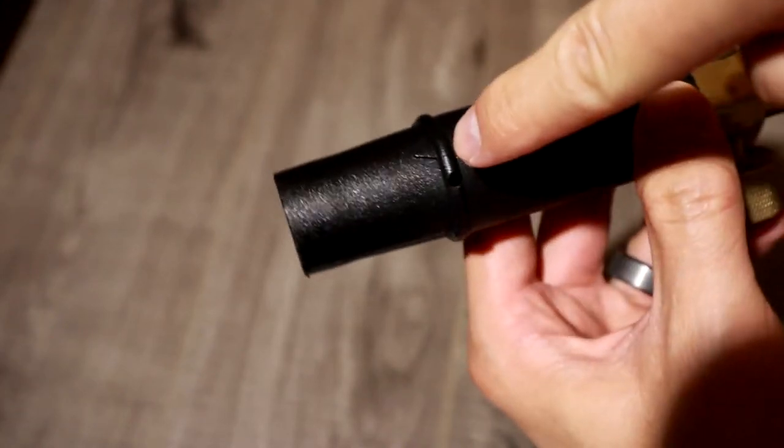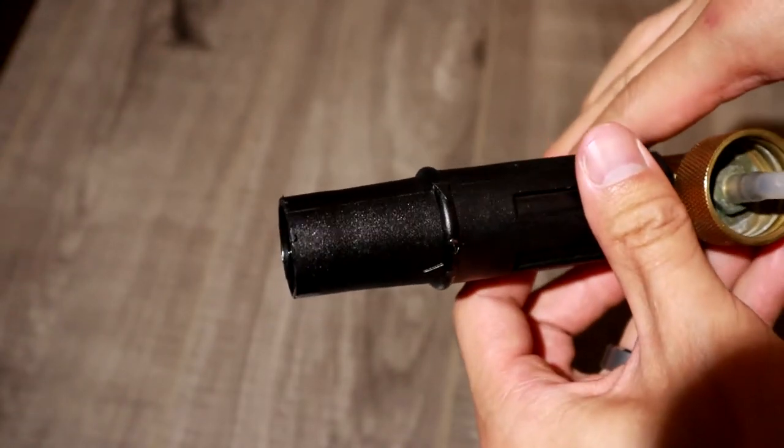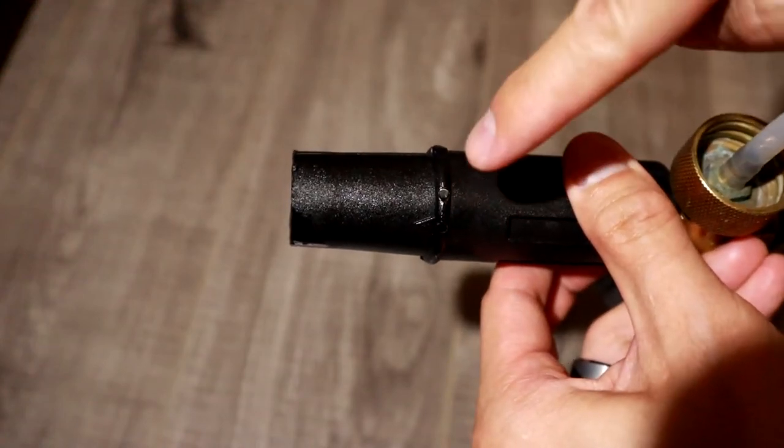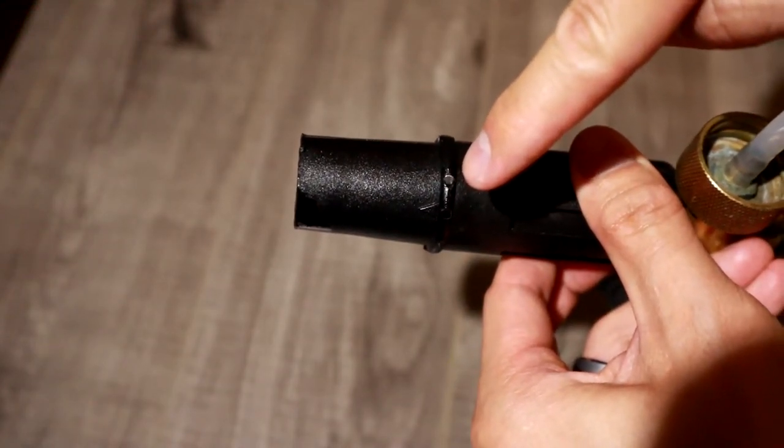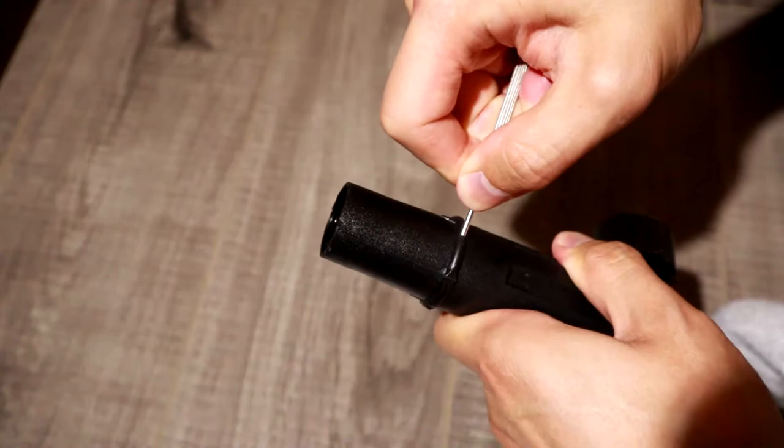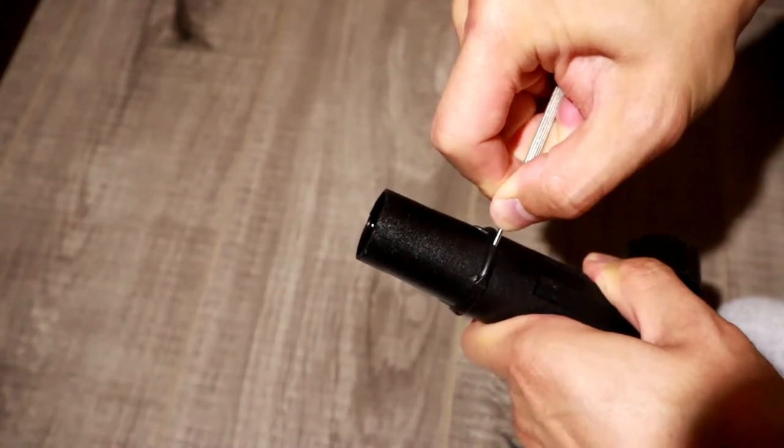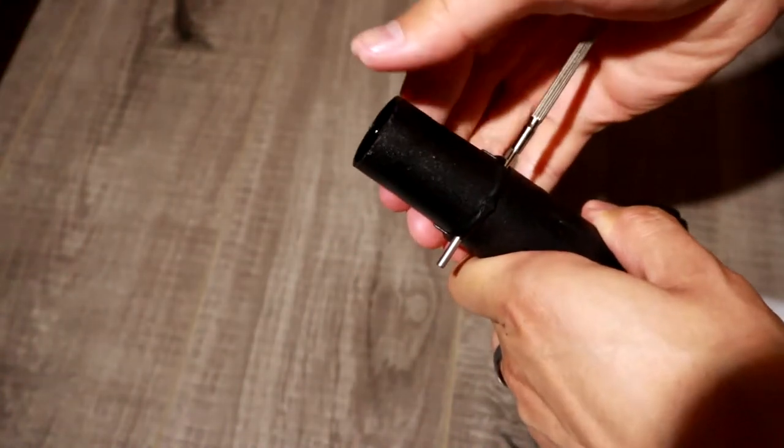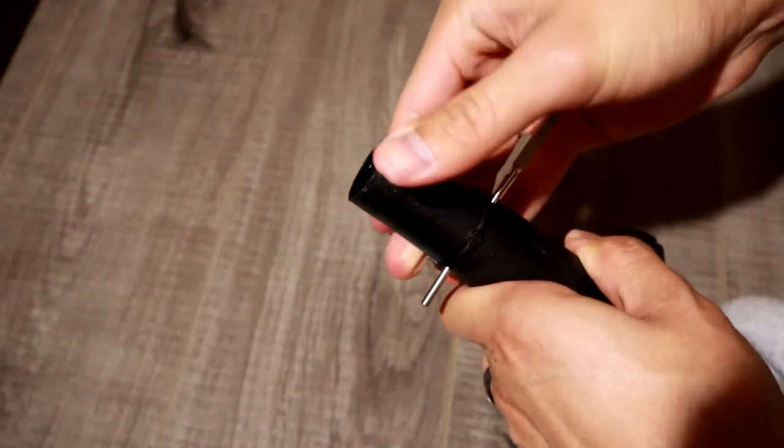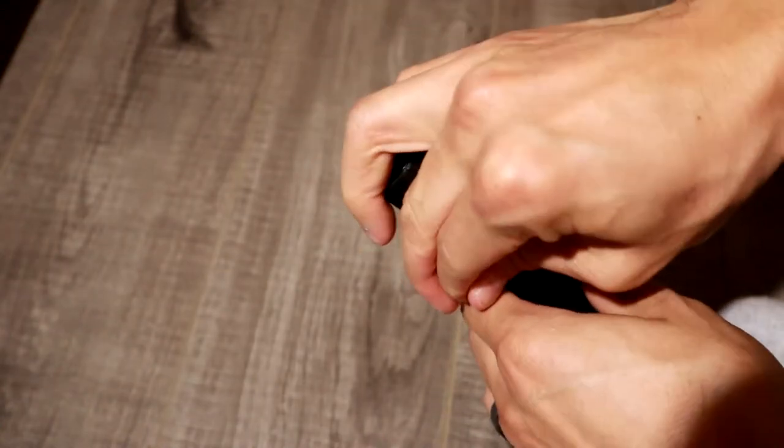First thing you want to do is take out this pin here, which holds the spray nozzle in place. Get a screwdriver, a really tiny one, and you can pop it out. Just be careful that you don't stab yourself when you're taking this out. Go ahead and pop this out, and then you can pull it out the rest of the way.